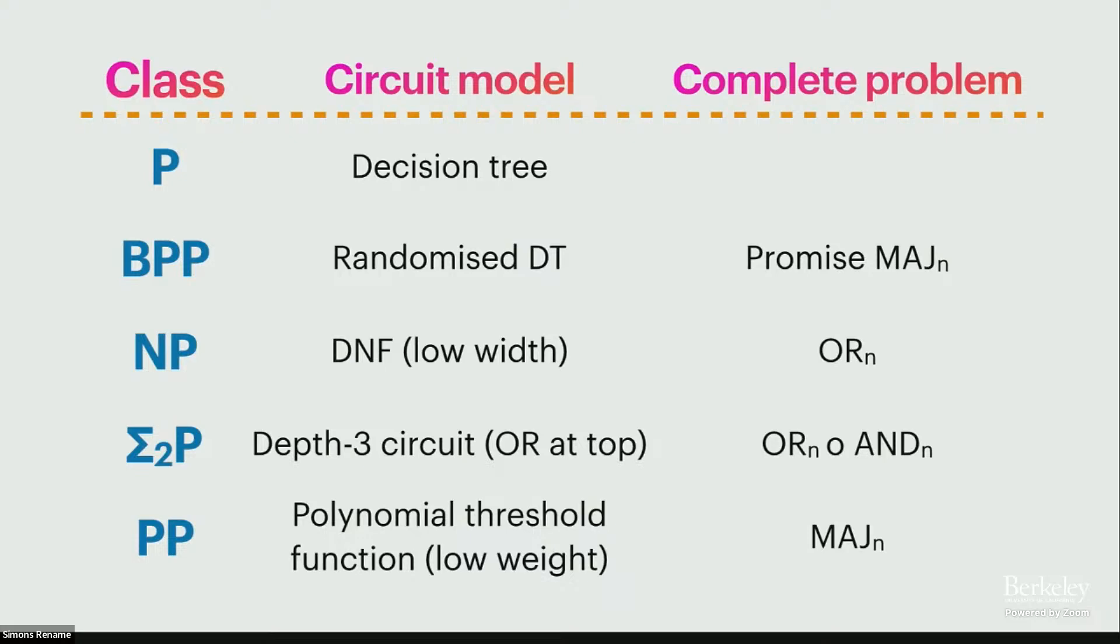And you can go up the polynomial hierarchy, so the second level, for example, would correspond to depth-three circuits with an OR gate at the top and I suppose polylog fan-in at the bottom. These are models we can prove more about for their concrete models of computation. Another way of defining them, if you want, is to just fix a complete problem. So for NP, for example, the complete problem would just be the OR function on n bits, and you could ask which Boolean functions reduce to computing OR under shallow decision tree reductions. So you could ask what class of functions can I compute as an OR of a bunch of shallow decision trees. And that's exactly low-width DNF in this model.